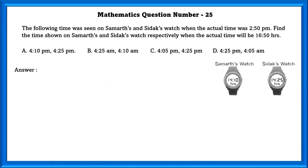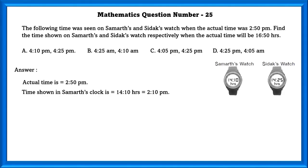Mathematics question number 25. Find the time shown on Amit's and Siddharth's watch when the actual time was 2:50 pm, and find the time shown on their watches respectively when the actual time will be 16:50 hours. The actual time is 2:50 pm. Time shown in Amit's clock is 14:10 hours, that is 2:10 pm — Amit's clock is 40 minutes slower. To find this we subtract the actual time from the time shown in Amit's clock.